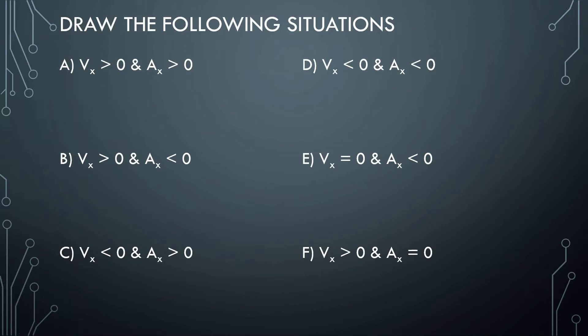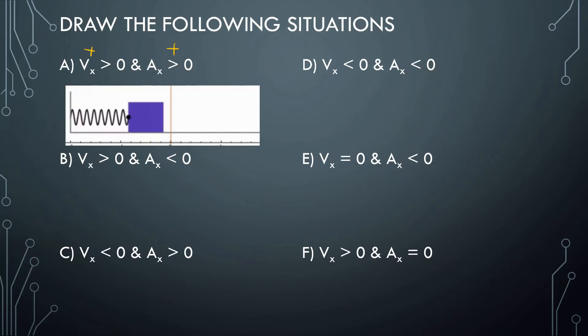Now we're drawing the following situations. We're drawing these as if we have a block on a spring that's oscillating back and forth horizontally. So for example, A, velocity is positive and the acceleration is also positive. If you did this, we should have a drawing that looks like this. This box is currently moving to the right and it's accelerating also to the right, because the force of the spring is pushing it to the right.